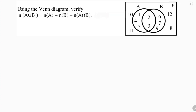First, set A. Looking at all the elements of set A, you will get: 1, 2, 3, 4, 5. So here you can write {1, 2, 3, 4, 5}.